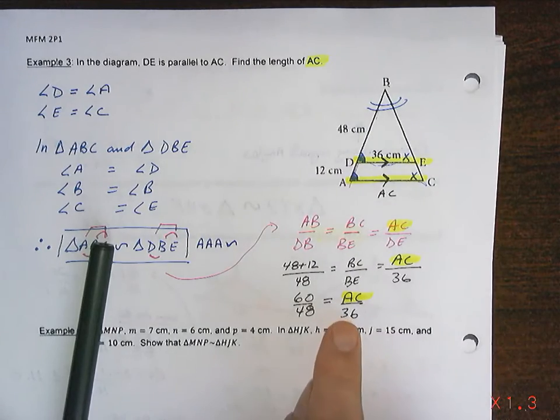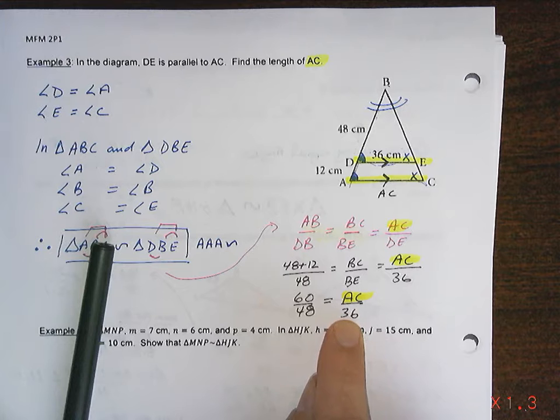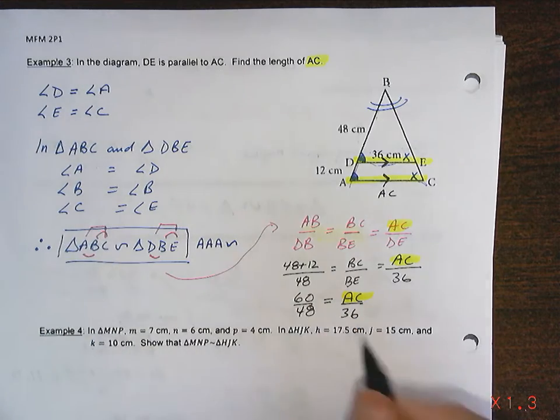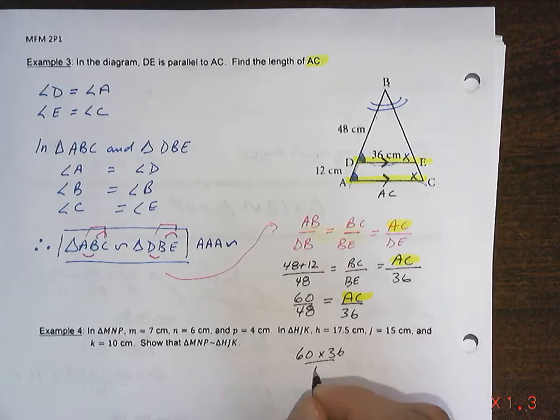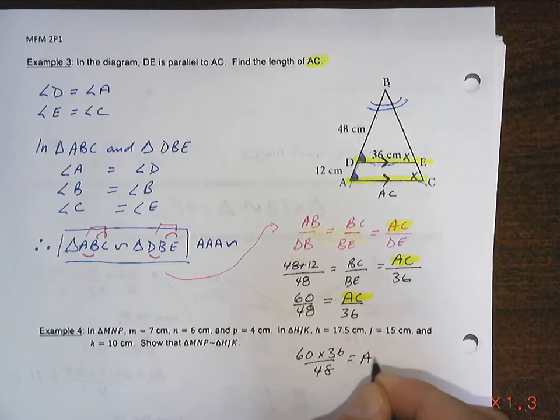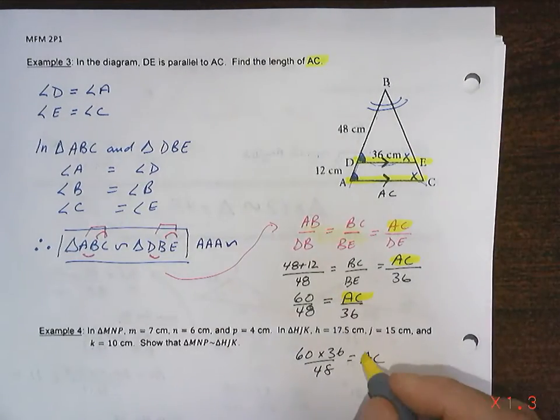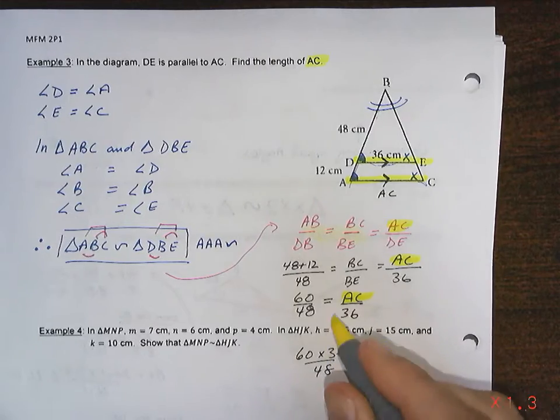All I have to do is notice that the AC is being divided by 36. The opposite of division by 36 is multiplication by 36. So I'm going to multiply both sides by 36.